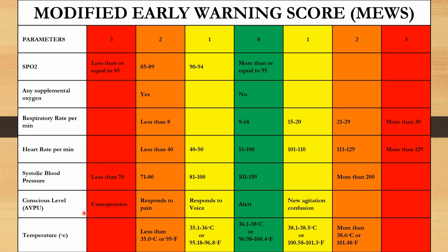The next parameter is conscious level. If the patient is fully alert, give a score of 0. If the patient is responding only to voice, give a score of 1. If the patient is responding to painful stimuli, give a score of 2. If not at all responding — unresponsive — give a score of 3. If the patient has new agitation, confusion, or is confused but alert, give a score of 1.